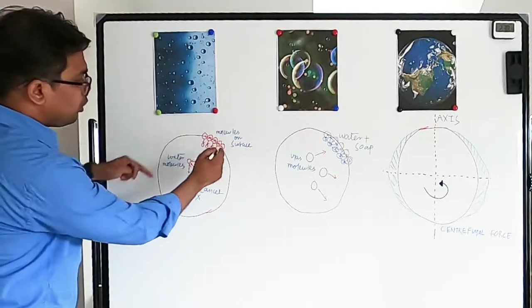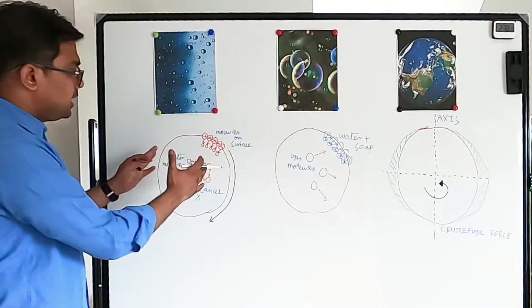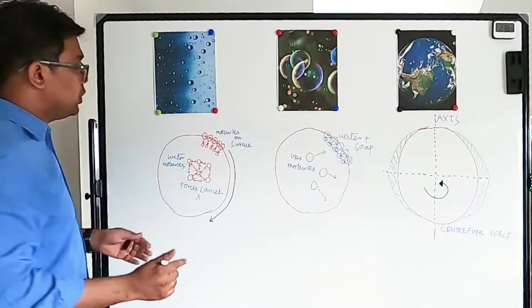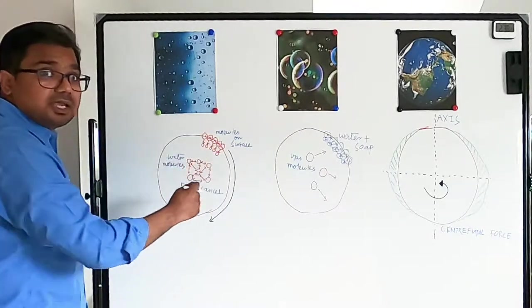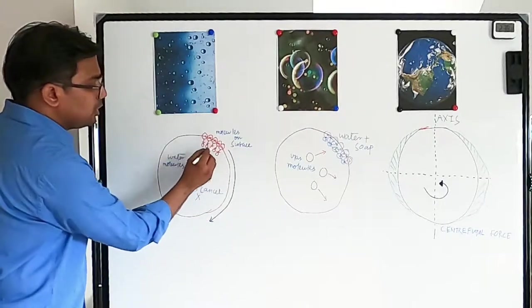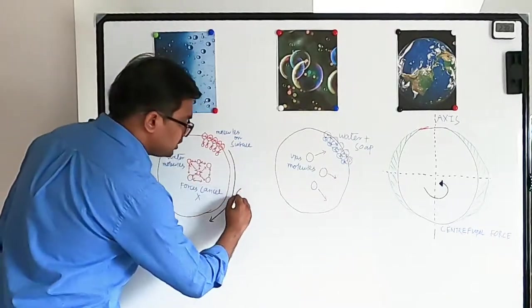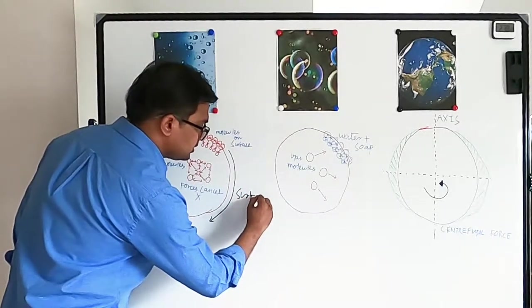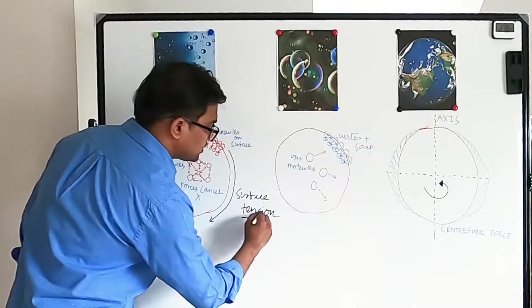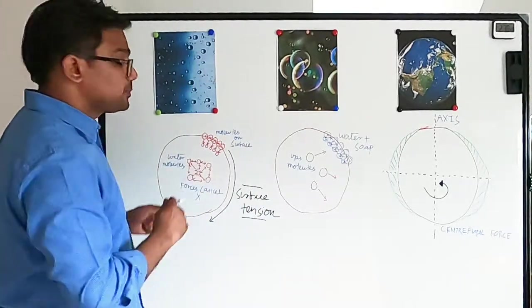All the molecules on the outer layer are pulled inwards and form the least energy state or shape, which is a circle. In 3D, that's a sphere. This property of the outermost molecules binding tightly is called surface tension. That's the property making the shape spherical.